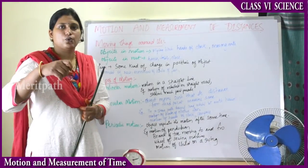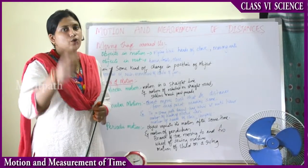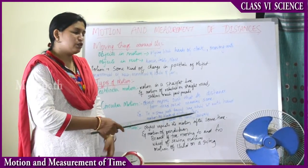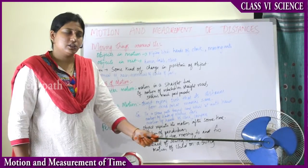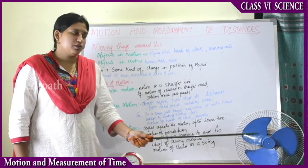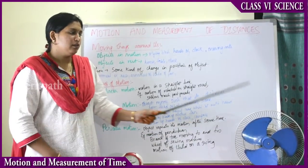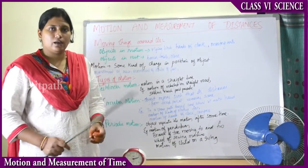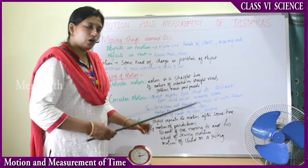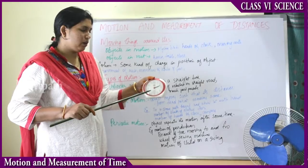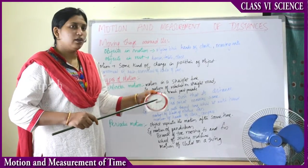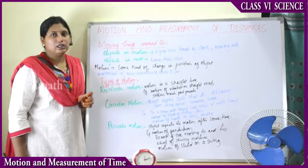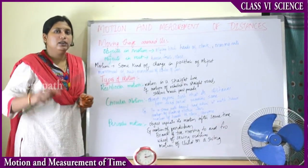If you tie a stone with a thread and rotate it, the stone will always rotate in a circular direction — that is circular motion. The blades of an electric fan move in circular motion, with the centre as the fixed point and the blades always at the same distance from it. The hands of a clock rotate clockwise in a round direction. A compass has two magnetic needles; the compass stays at rest but the needles always move in a circular direction — that is circular motion.